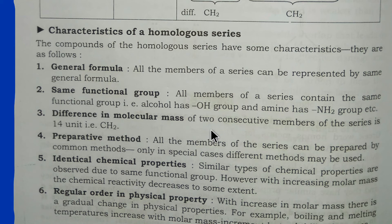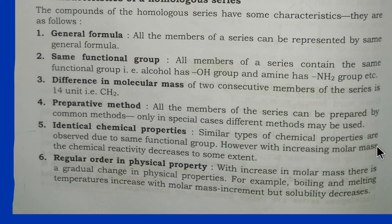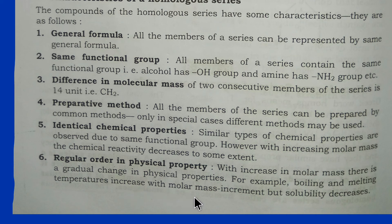The difference in molecular mass of two consecutive members is 14 units. Regarding preparative methods, all members of the series can be prepared by common methods; only in special cases are different methods used. Members show similar chemical properties due to the same functional group, though with increasing molar mass, chemical reactivity decreases to some extent. There is also a regular gradual change in physical properties — for example, boiling and melting temperatures increase with molar mass, but solubility decreases.